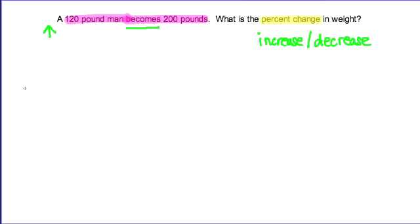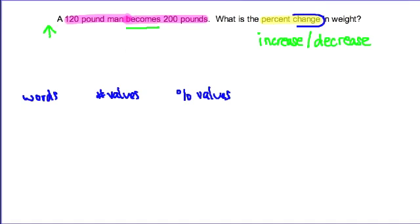Just like all our proportions, we're going to have words, number values, and percent values. What the words represent is that we are comparing change, because we're trying to find the percent change. So change has to be part of our comparison, and we're going to compare the amount of change — the total change — to the original amount.